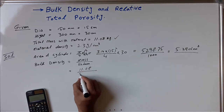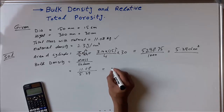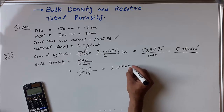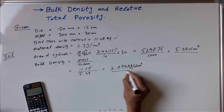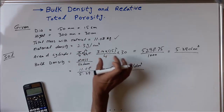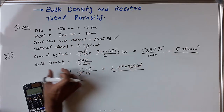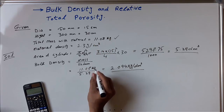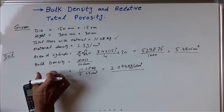Now, bulk density equals mass divided by volume. We have mass of 11.08 kg divided by volume of 5.29 dm³. The bulk density is 2.094 kg per dm³. We calculated the area and volume using pi over 4 times d squared times height, then divided mass by volume.